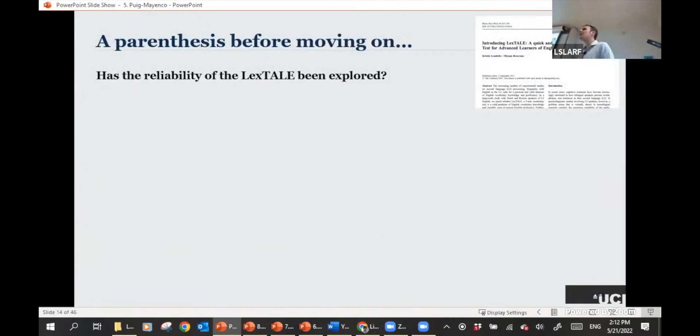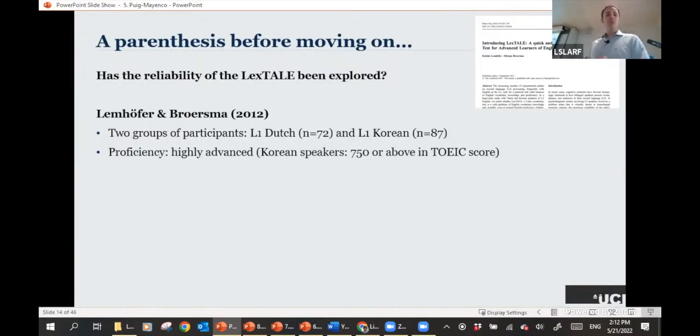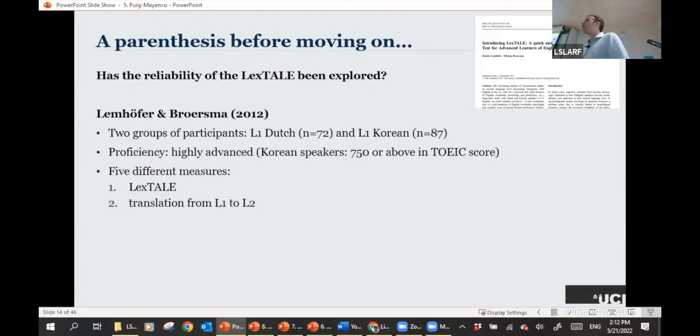But I guess the question is, has the reliability of the LexTALE been explored as a measure of global proficiency? Well, the first study to do so was the one in which this was proposed. Lemhöfer and Brisbane tested 72 Dutch speakers of English and 87 Korean speakers of English. They focused on highly advanced participants to make sure that the Dutch and Korean groups had comparable proficiencies. They just included Korean speakers who had a 750 or above in the TOEIC score, which would be a C1, kind of C2 level of proficiency, so fairly advanced. They had five different measures.